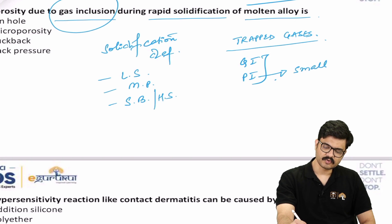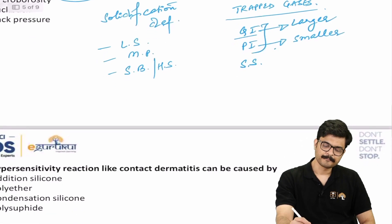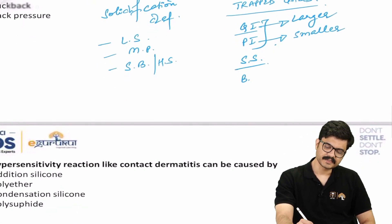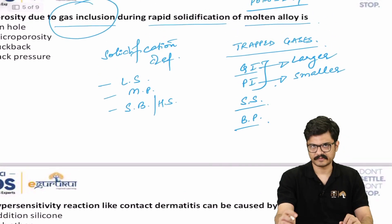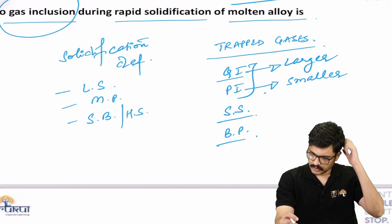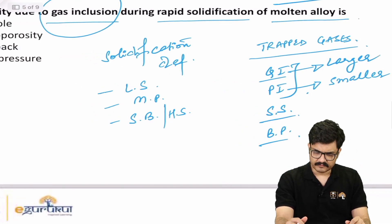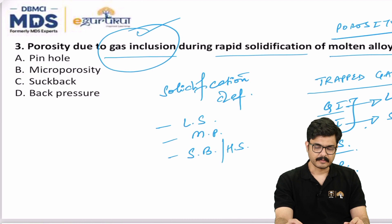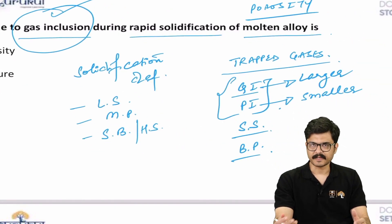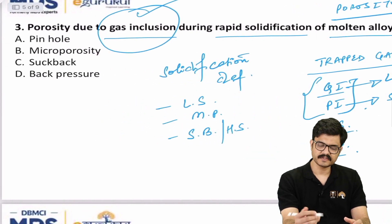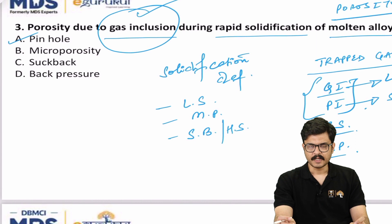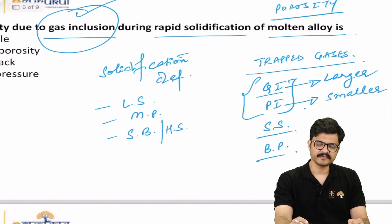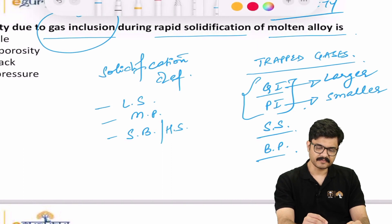That is gas inclusion and pinhole, more or less the same, just that in pinhole, as the word suggests, the size of the pores is smaller as compared to gas inclusion in which the size of the pores is relatively larger. Then you have subsurface porosity and you have the back pressure porosity. That is the entire story of porosity. The moment you see gas inclusion term, you have to look for the options of either gas inclusion porosity or pinhole porosity. In this, out of these two, only pinhole is given, so the answer is pinhole.